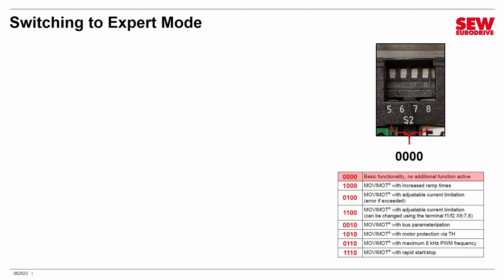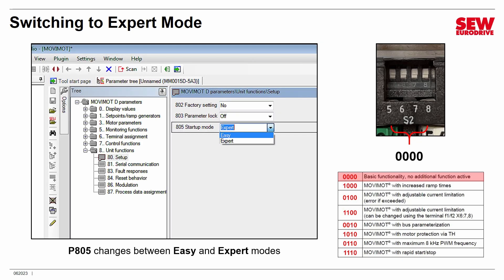How do you switch to Expert Mode? It's relatively simple. First, make sure your DIP switch bank S2, switches 5 through 8, are set to all zeros — the basic functionality mode. If your Movimot control head switches are set to an alternative behavior, change them back to all zeros before switching to Expert Mode. Once done and the Movimot is powered up, connect to your PC using a USB interface, start Movitools Motion Studio, scan in, then go to parameter 805, change it from easy to expert. That's all.